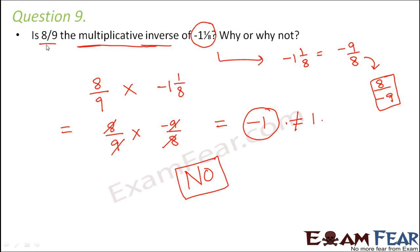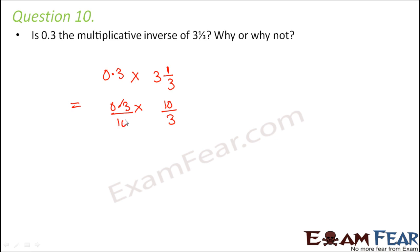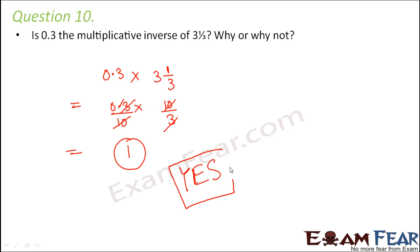Question 10: Is 0.3 the multiplicative inverse of 3⅓? We multiply the two and check if we get 1. Multiplicative inverse is the number which, when multiplied by the original, gives 1. So: 0.3 × 3⅓ = 3/10 × 10/3. The 10s cancel and the 3s cancel, giving 1. Therefore, yes, 0.3 is the multiplicative inverse of 3⅓.